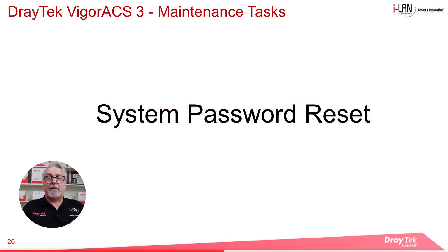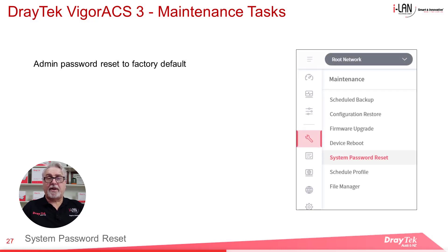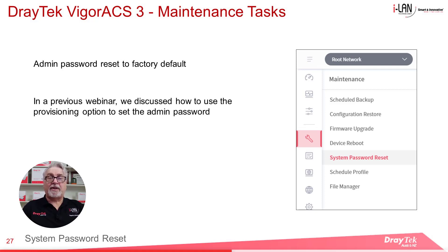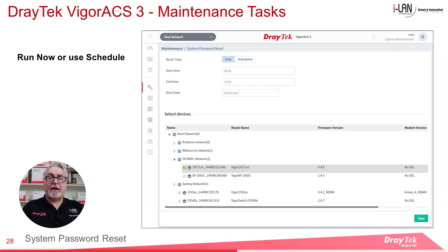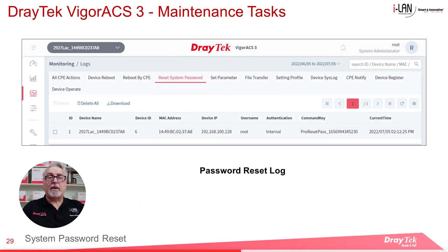System Password Reset. The admin password of CPE devices can be reset using ACS3. Using this option means that the admin password will be reset to the factory default, which is 'admin'. This may need to be done if the administrator forgot the login password when attempting to log in directly to the device. In a previous webinar we discussed how to use the provisioning option to set the admin password in CPE devices — this is something similar, but in this case we set the password to factory default settings. The password reset can be run immediately or at a scheduled time. We just need to select the CPE and click Save to start the process. When completed, you can check the logs under the Reset System Password tab in the Monitoring menu.